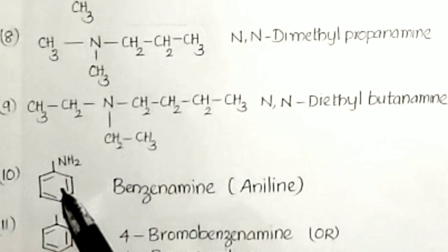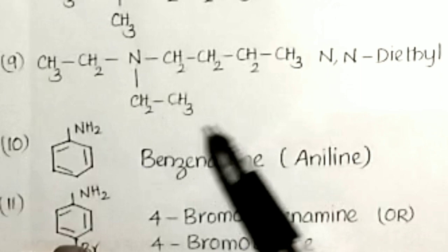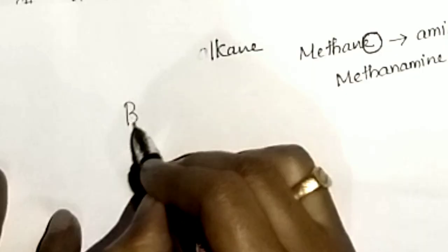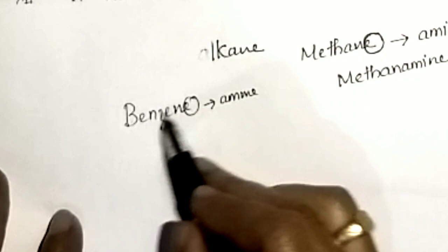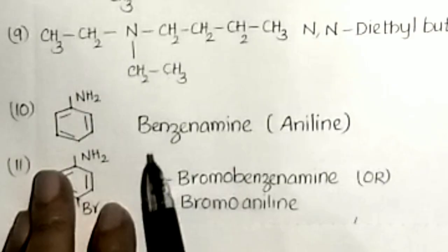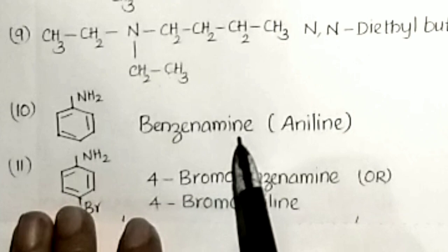Next, for benzene ring with NH2: benzene's 'e' is replaced by 'amine' to give benzenamine. Benzenamine is simply known as aniline. The IUPAC name is also considered as aniline.